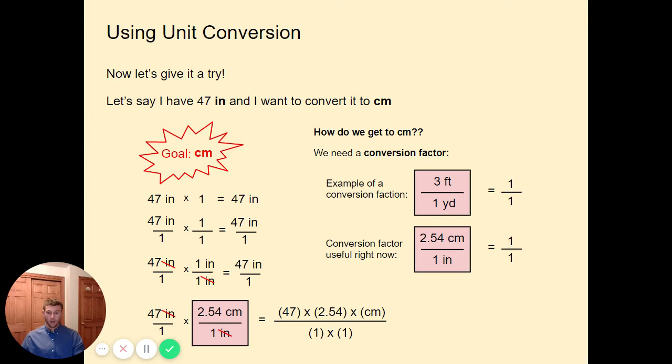So now we just multiply our top and our bottom like so. We have 47 times 2.54 times centimeters over 1 times 1, and we get our final answer of 119.38 centimeters over 1, which is just the same thing here, which is our final answer. Now it's important to just double check with our goal initially. The goal was to put in centimeters. Here are our answers in centimeters. So it checks out. We did a good job.